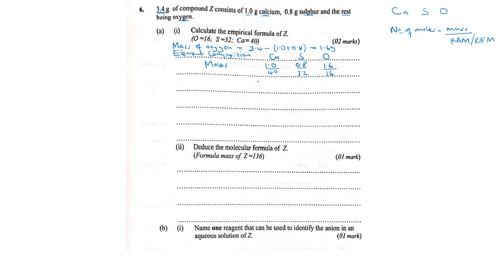To get the number of moles, we divide each mass by its relative atomic mass. Moles of calcium = 1.0 ÷ 40 = 0.025. Moles of sulfur = 0.8 ÷ 32 = 0.025. Moles of oxygen = 1.6 ÷ 16 = 0.1. These are the number of moles for each element.